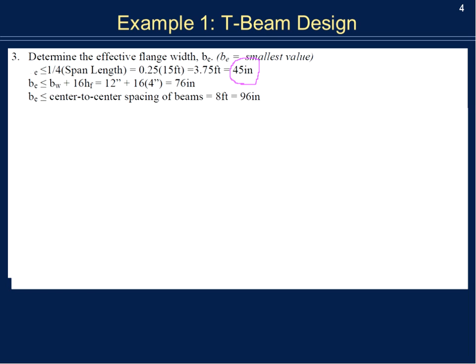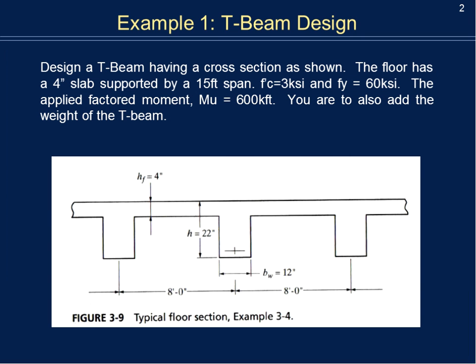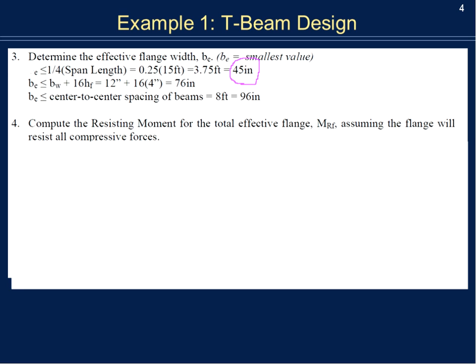Now we determine whether all the compressive strength can be handled in the flange. If so, it's essentially a rectangular beam — not a true T-beam. If additional compression capacity is needed from the web, then it's a true T-beam. Based on this example problem, I can tell you it will be a true T-beam.